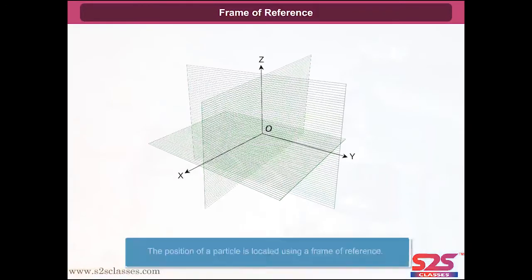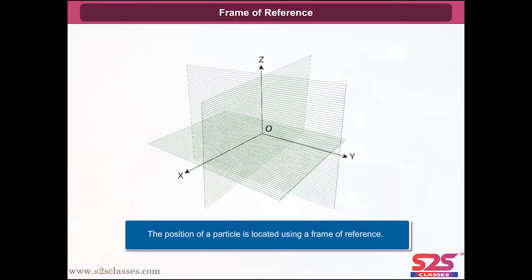The position of a particle is located using a frame of reference. In the given figure, the point of intersection of the three axes X, Y, and Z is the origin O, and serves as the reference point. The coordinates X, Y, and Z of an object describe the position of the object with respect to this coordinate system.